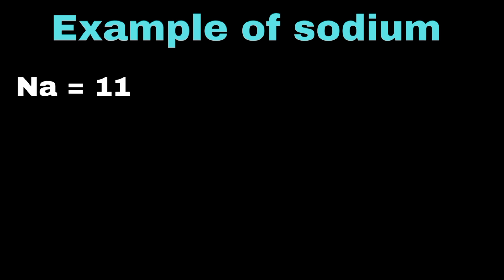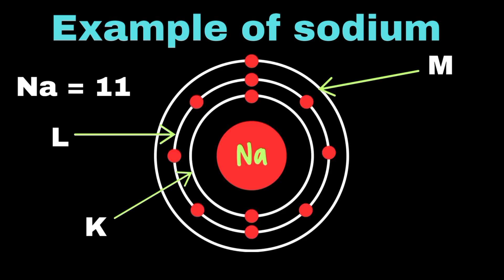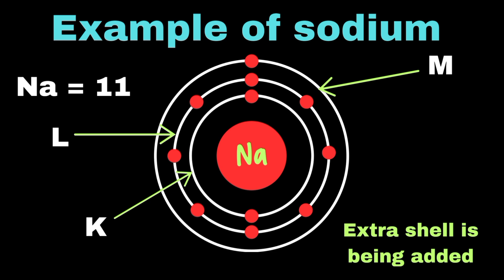Similarly, we can verify this for the third element of the group, sodium, whose atomic number is 11. The first shell will have 2 electrons, and the second shell will have 8 electrons, but we are still left with 1 electron, which must be placed in the M-shell. Again, an extra shell is being added here. So we can conclude that whenever we talk about group trends or study elements from top to bottom, extra shells will be added and the electronic cloud will expand.